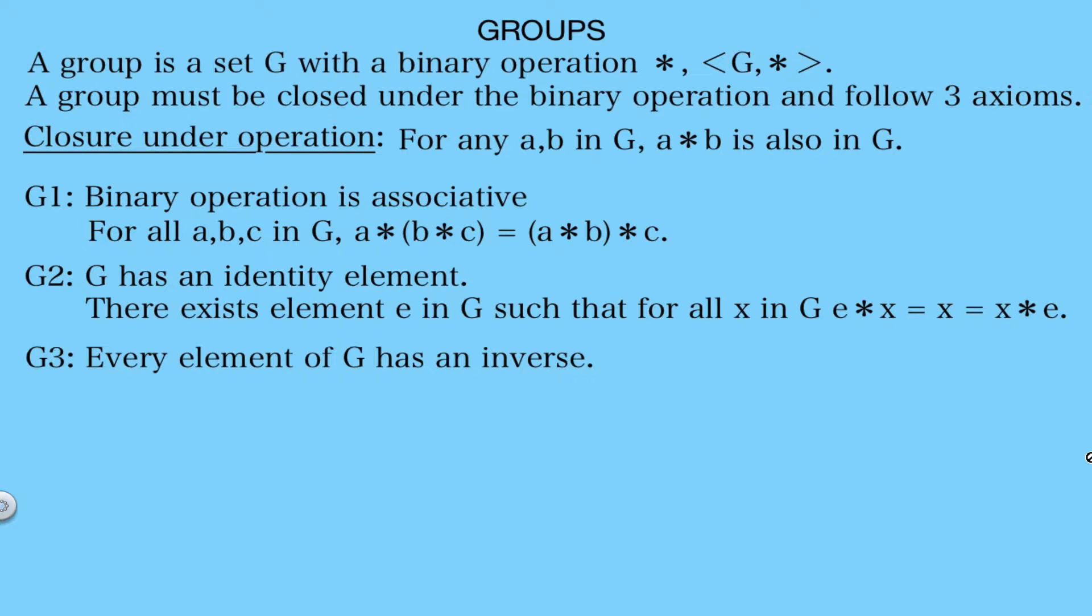And the final axiom requires that every element of the group has an inverse. So for every X in G, there must exist an X prime in G such that X star X prime equals E, which equals X prime star X. So every element has another element in the set that essentially undoes it or sends it back to the identity.